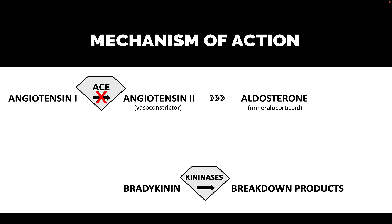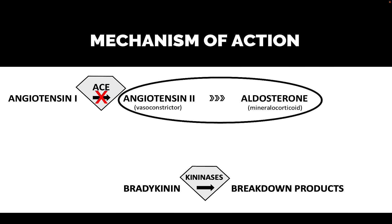The red X depicts the inhibition of ACE. By inhibiting that enzyme, we reduce the production of angiotensin 2, and we also reduce the secretion of aldosterone. Let's talk about these two things.